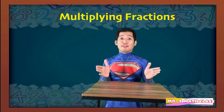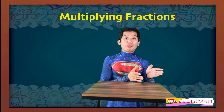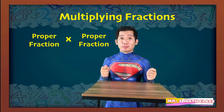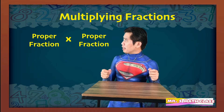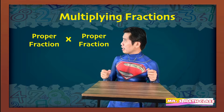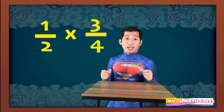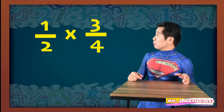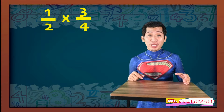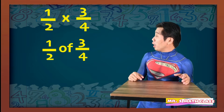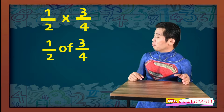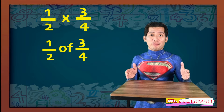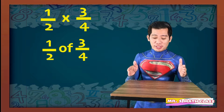Now let's have a proper fraction multiplied by another proper fraction. Let's have this first example: one half times three-fourths can be changed to the statement 'one half of three-fourths.' It's more easy this time — one half of three-fourths.